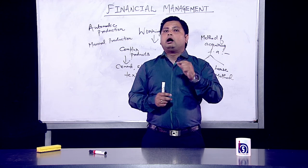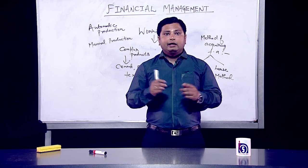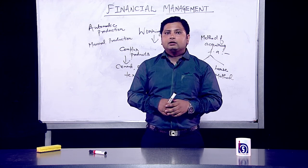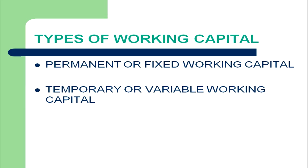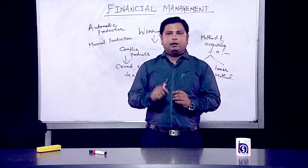There are two types of working capital: permanent working capital and temporary working capital. Permanent working capital is also known as fixed working capital, while temporary working capital is also known as variable working capital.